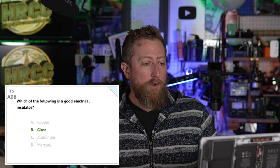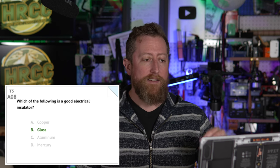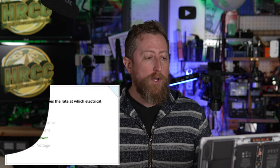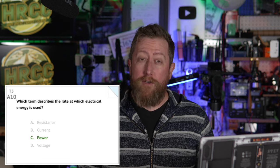Alpha 08: which of the following is a good electrical insulator? And it is B, glass. The rest of them make good antennae or conductors, not good insulators. Alpha 09: which of the following describes alternating current? And it is C, current that alternates between positive and negative directions. Alpha 10: which term describes the rate at which electrical energy is used? And that is C, power.